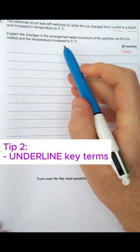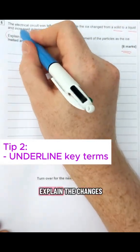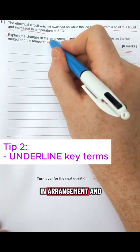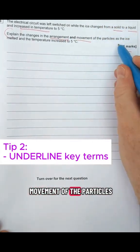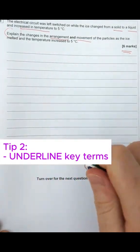from a solid to a liquid and then increasing in temperature to five degrees. The question says explain the changes in arrangement and movement of the particles as the ice melts and the temperature increases to five degrees.